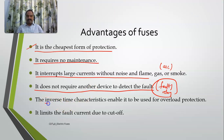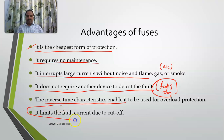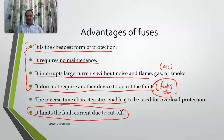The inverse time characteristic can be utilized for overload protection, and the fuse limits the fault current due to its cutoff action. To summarize the key advantages: it is the cheapest form of protection, requires no maintenance, interrupts large currents without noise, and does not require any auxiliary device.